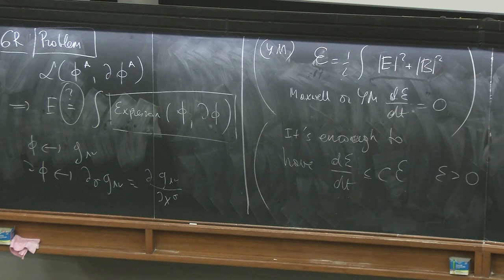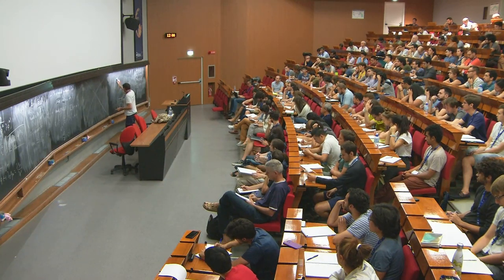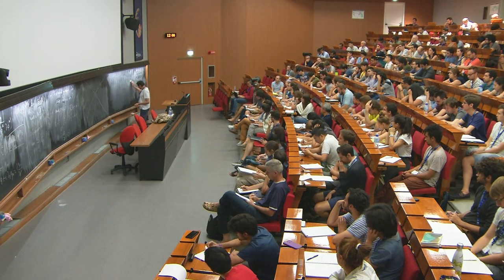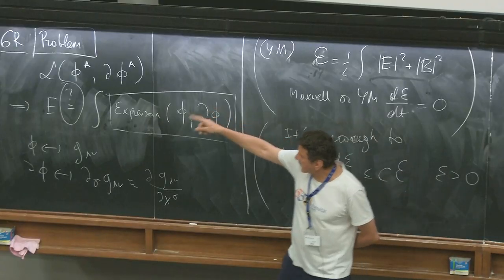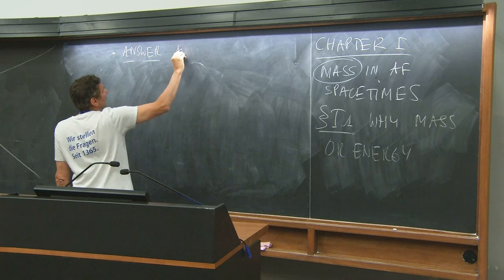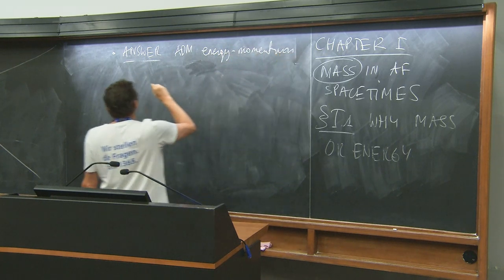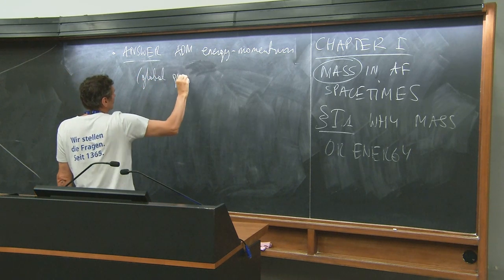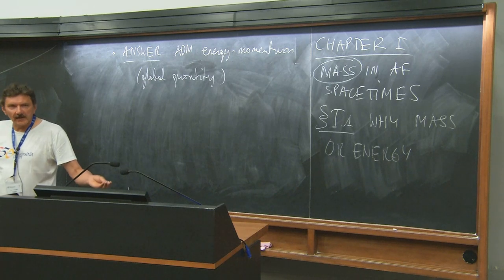It turns out that there is one global notion of energy for asymptotically flat spacetimes — that's what I'm going to discuss today. So there is something called the global energy. There is no well-defined local expression like before, but there is a well-defined integral. This is the ADM mass or ADM energy-momentum — a global integral rather than a local object.